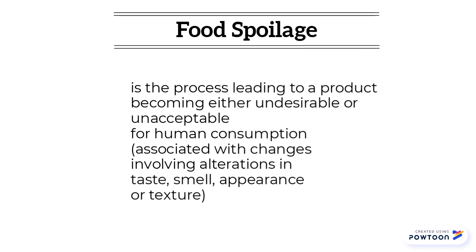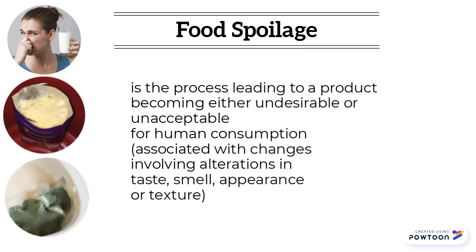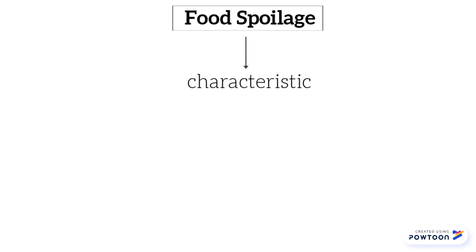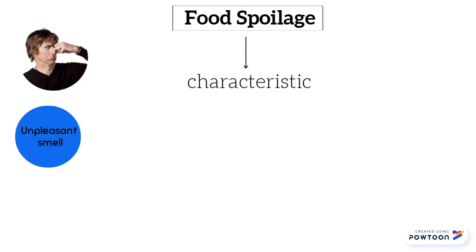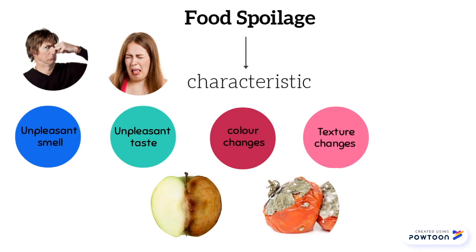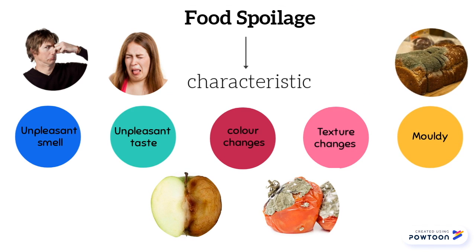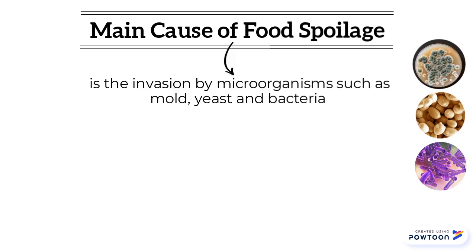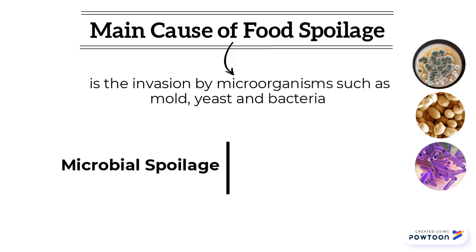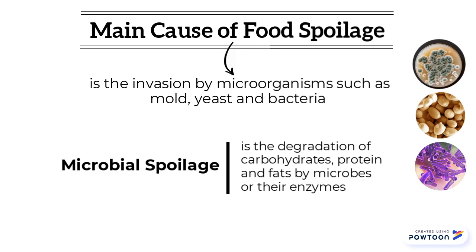Food spoilage is the process leading to a product becoming either undesirable or unacceptable for human consumption. It is associated with alteration in taste, smell, appearance or texture. The characteristics of food spoilage are unpleasant smell, unpleasant taste, colour changes, texture changes and mouldy. The main cause of food spoilage is the invasion by microorganisms such as mould, yeast and bacteria. This is known as microbial spoilage — the degradation of carbohydrates, proteins and fat of food by microbes or their enzymes.